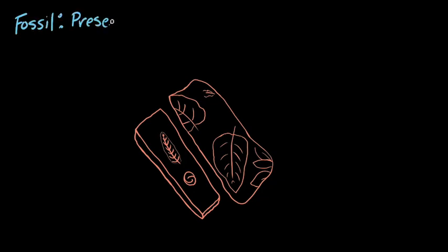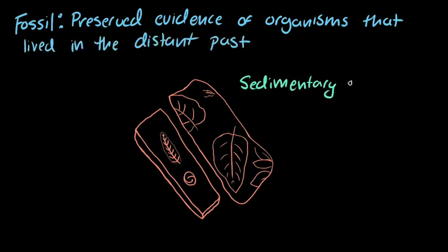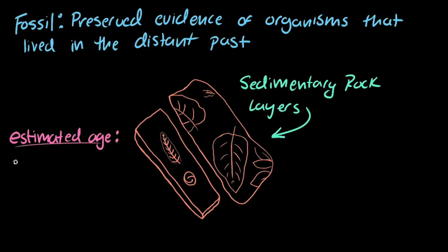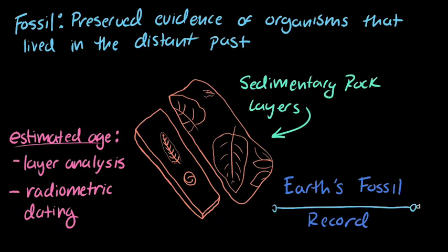Fossils are preserved evidence of organisms that lived long ago. This evidence of life is most commonly found in layers of sedimentary rock. Now, depending on how deep they are in the layers of sedimentary rock, or their results from radiometric dating, fossils can be given an estimated age and be placed on Earth's fossil record.